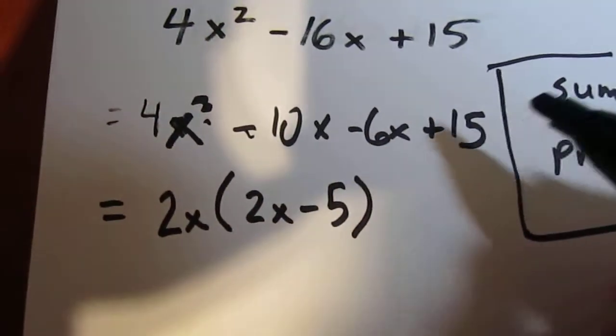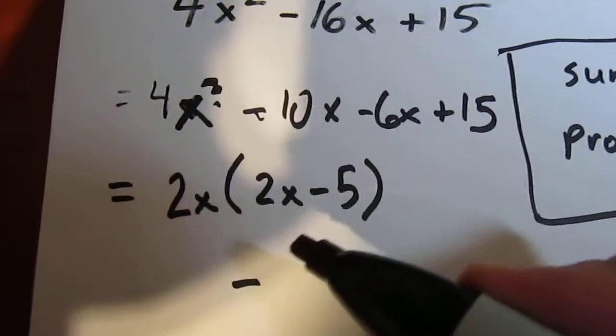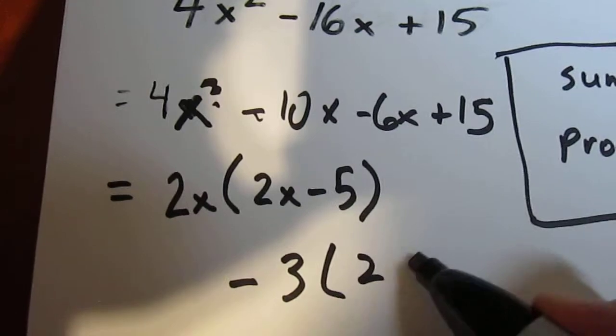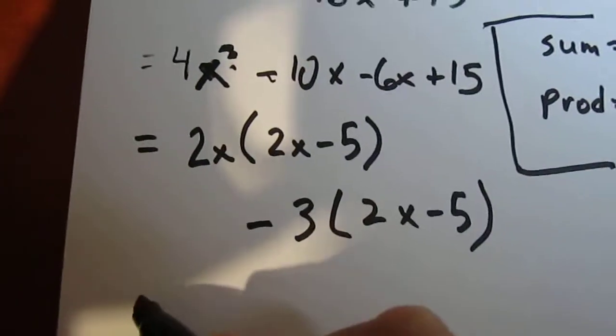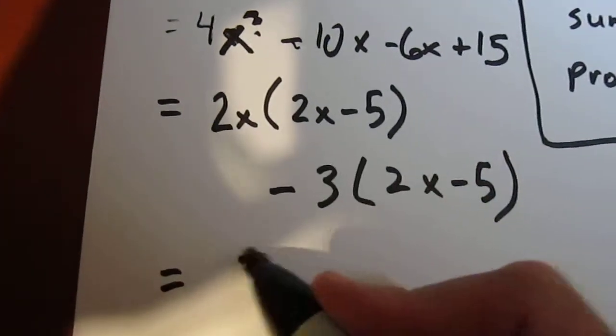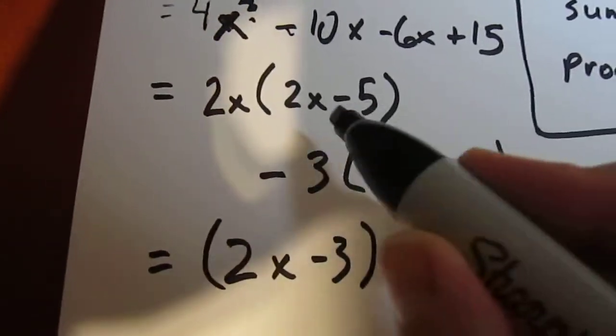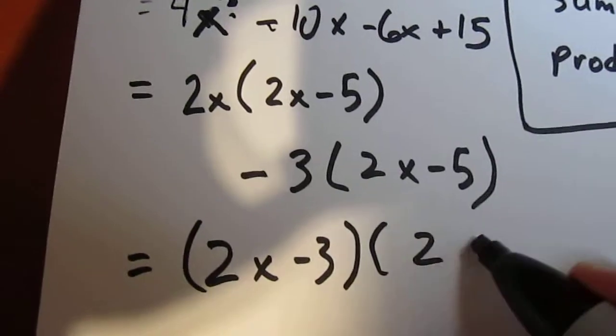Minus 6x plus 15 we can factor out negative 3, and then inside the bracket we're left with 2x minus 5. And so what we have is 2x minus 3 as one of our brackets, and 2x minus 5 as the other one.